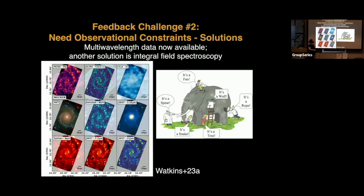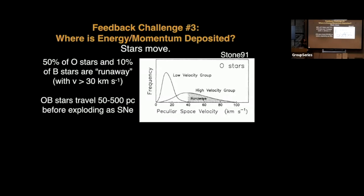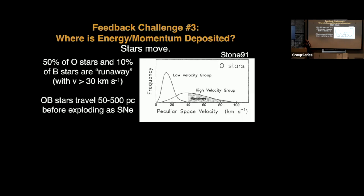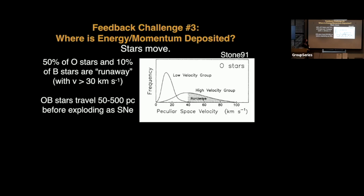In terms of feedback, there is another way to assess it observationally, and that is integral field spectroscopy — you can get a lot of information just from optical IFU data as well. Feedback challenge number three is the question of where and when the energy and momentum are deposited. The where question comes back to the issue that stars move — we learned a lot from Gaia. Massive stars are very mobile: something like 50% of O stars and 10% of B stars are runaways, meaning they move faster than 30 km/s.